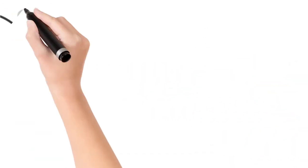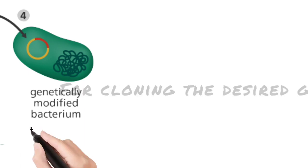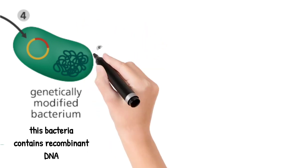In the next step, the recombinant DNA is incorporated in E. coli bacteria for cloning the desired gene. As the bacteria contains our recombinant DNA, it is called genetically modified bacteria.